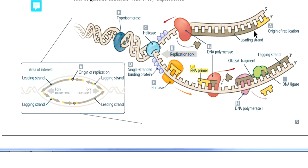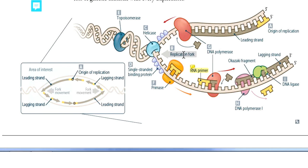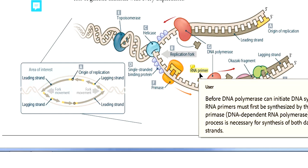The leading strand is going towards the replication fork and the lagging strand is coming away from the replication fork. This is the DNA polymerase enzyme which is synthesizing and adding nucleotides to the daughter strand, and we have some other enzymes as well.